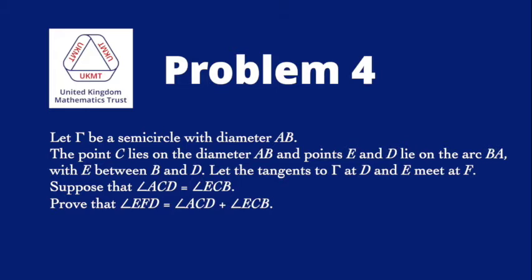Let the tangents to gamma at D and E meet at F. Suppose that the angle ACD equals the angle ECB. Prove that the angle EFD is the sum of the angles ACD and ECB.